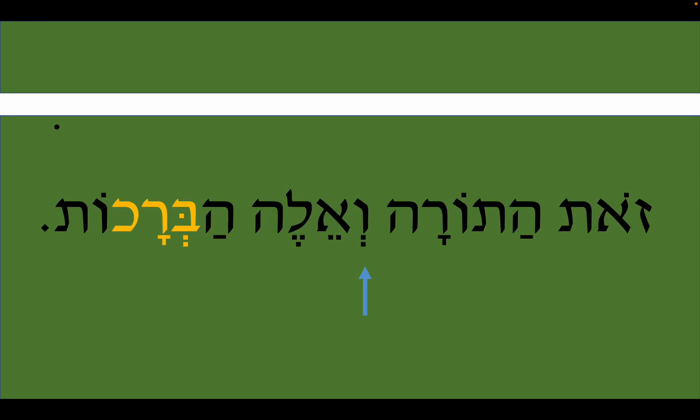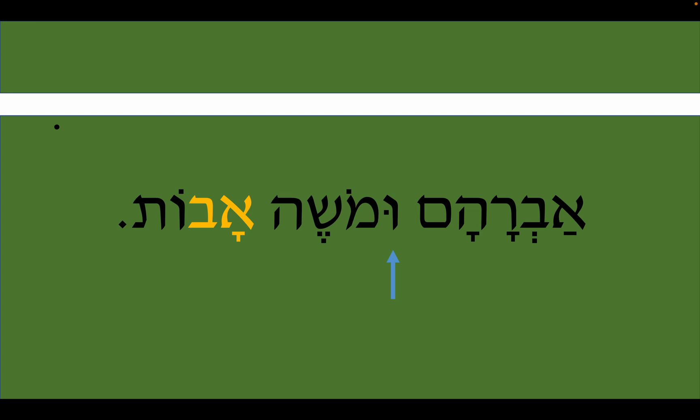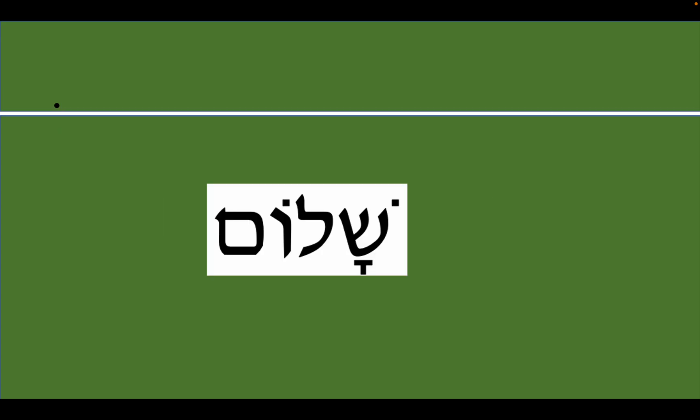Here it is in some sentences: Zot ha-Torah ve'ele hav-rechot — this is the Torah, and these are the blessings. Avraham u-Moshe avot — Abraham and Moses are fathers. Shalom.